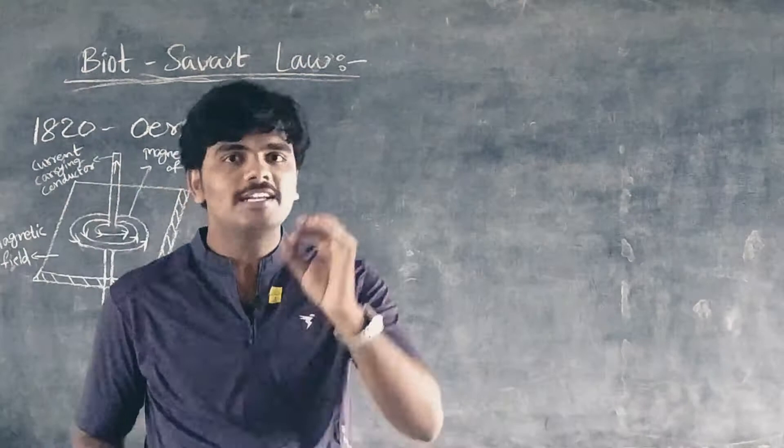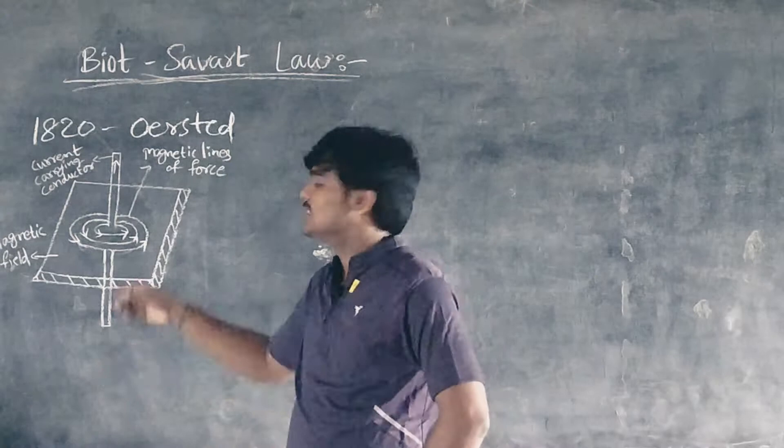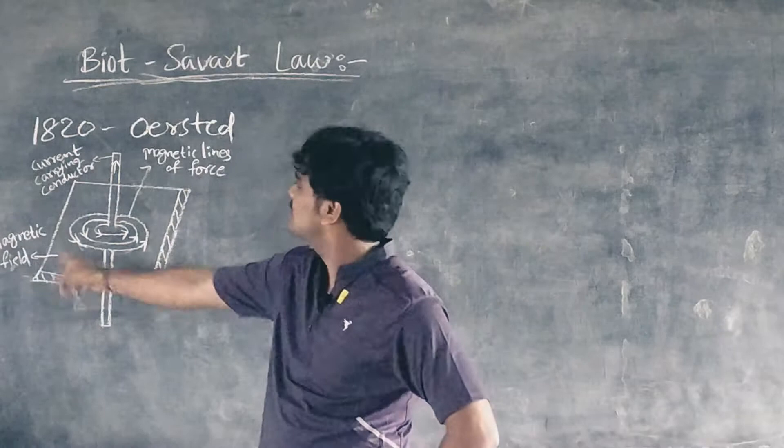According to Oersted's experiment, a current-carrying conductor produces a magnetic field as shown in the figure. The magnetic field exists as long as there is current in the conductor. This is the current-carrying conductor and this is the magnetic field with these magnetic lines of force.